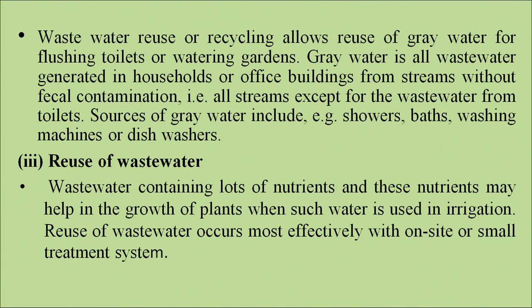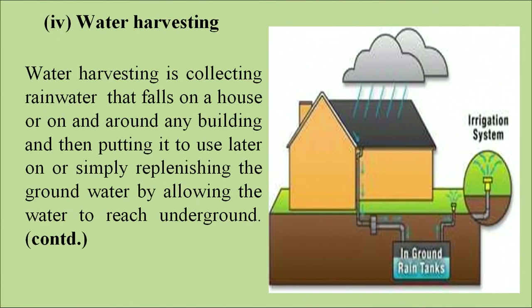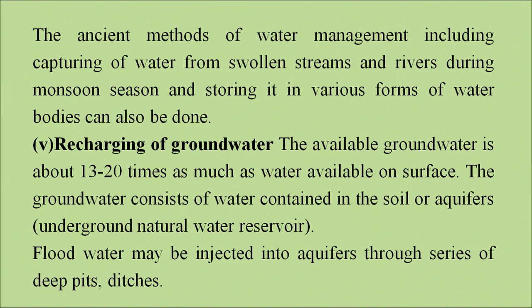Reuse of wastewater: wastewater contains lots of nutrients, and these nutrients may help in the growth of plants when such water is used in irrigation. Reuse of wastewater occurs most effectively with on-site or small treatment systems. Regarding rainwater harvesting — the pictorial depiction on screen shows how rainwater falls on rooftops, gets collected in an underground tank, and after required treatment can be used for various purposes. Water harvesting involves collecting rainwater that falls on rooftops and buildings for later use, or simply replenishing groundwater by allowing the water to reach underground. Ancient methods of water management include capturing water from swollen streams and rivers during monsoon season and storing it in various forms of water bodies.